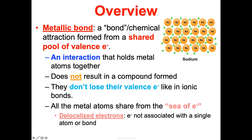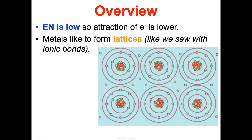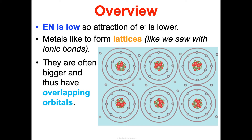One good thing is that since metallic bonds don't result in a compound, you don't have to learn any new naming rules or how to write chemical formulas for them. But I do want you to know how they form. Electronegativity — the ability to attract electrons in a bond — is low in metals, so attraction to electrons is low. Metals also form lattices, that rigid organized arrangement we also saw in ionic bonds. Metals, especially transition metals, are often bigger and have many overlapping orbitals.